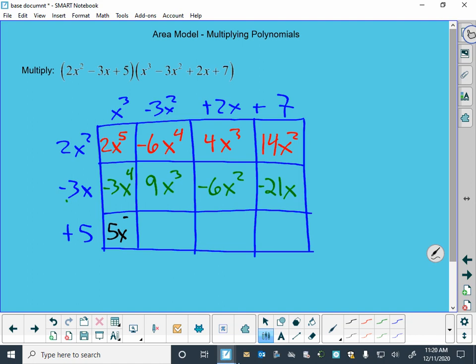In our final row, we've got five times x³, five times negative three is negative 15x², five times 2x is 10x, and five times seven is 35. Now, one of the things that we notice when we're going to add these things together...